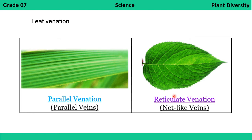Here you can see two types of leaf venation: parallel venation and reticulate venation. In parallel venation, the veins go straight from one end to the other. In reticulate venation, the veins show a net-like structure.